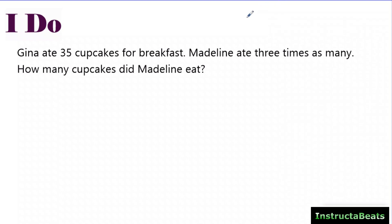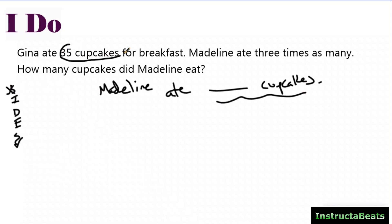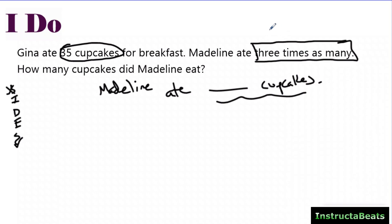Let's start with the question. It says: Gina ate 35 cupcakes for breakfast. Madeline ate three times as many. How many cupcakes did Madeline eat? I'm going to do my size-check strategy. My statement is going to say: Madeline ate blank cupcakes. So I'm going to identify anything about cupcakes. Gina ate 35 cupcakes. Madeline ate three times as many — I put a box around this because it's showing me it's a multiplicative comparison. The key phrase 'three times as many' tells me I'm doing multiplicative comparison.